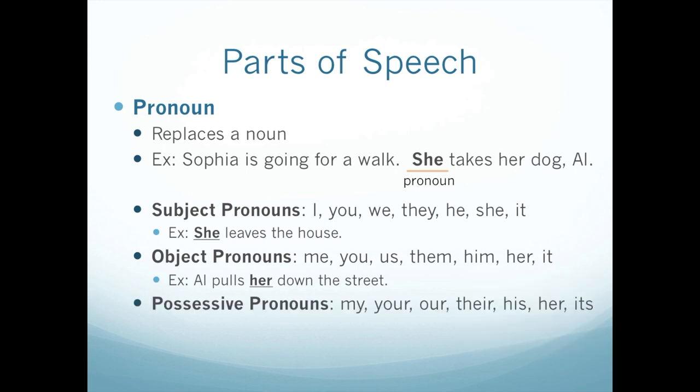You also have possessive pronouns. So if you think about I as the subject and me as the object, then for possessive it would be my. So: my, your, our, their, his, her, its. Sophia runs with her dog. If you see her comes before the noun dog, it's possessive. Something possessive means it belongs to him or her. So her dog — that's Sophia's dog.